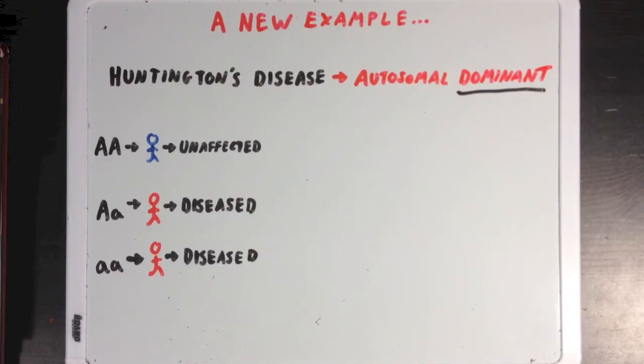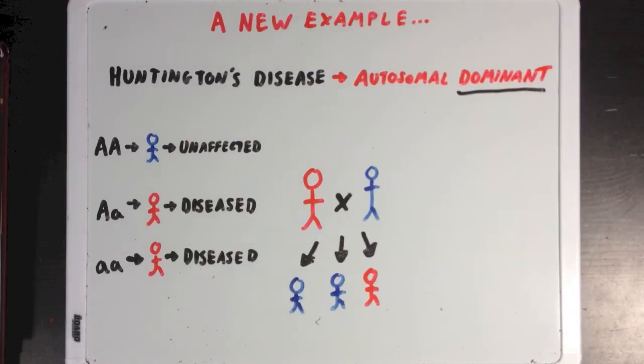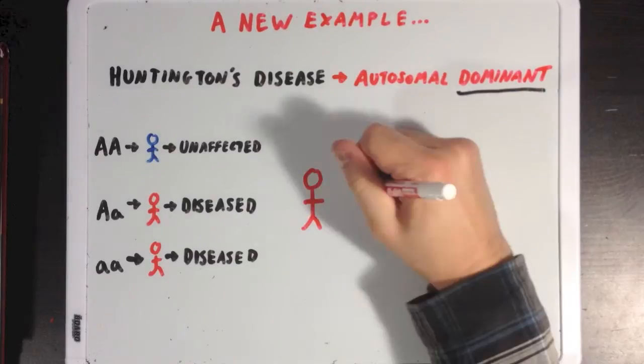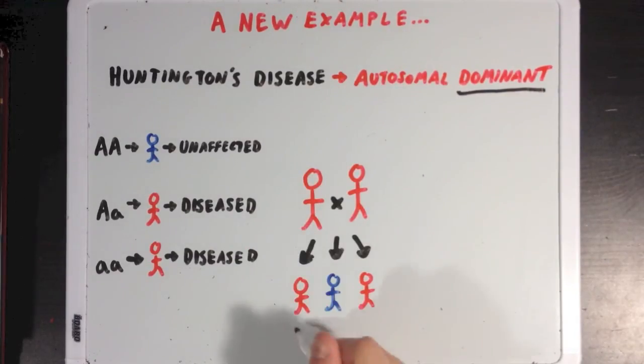The key difference in this case is that no matter who the guy has children with, even if that guy just has one copy of the Huntington's gene, there's still a chance that there will be children affected by the disease. Now, of course, if our guy has children with someone who was also affected by the disease, then more of his children would be affected. But there's still a chance either way.